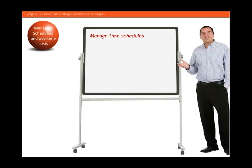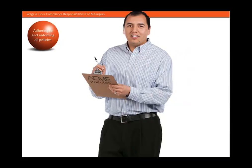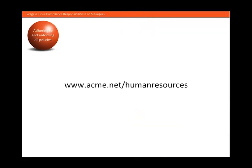As a manager or supervisor, you are responsible to manage your employees' schedules and also to control overtime costs. It is important that managers and supervisors communicate clearly that all overtime must be pre-approved. But under FLSA law, if an employee has worked overtime, ACME must pay for the hours worked, even if the time was not pre-approved. This is another reason why accurate records are so important. Employees who repeatedly work overtime without approval are subject to disciplinary action. As a manager or supervisor, you are responsible for knowing and reinforcing the company policies and the policies of your department. It is a good idea to review ACME's overtime policy on a regular basis. You will find it on the Human Resources page on the Employee Portal.